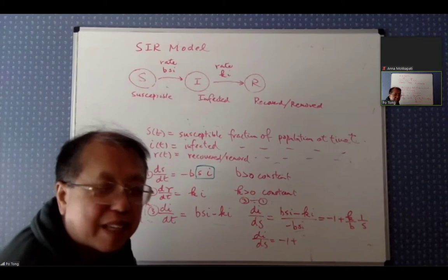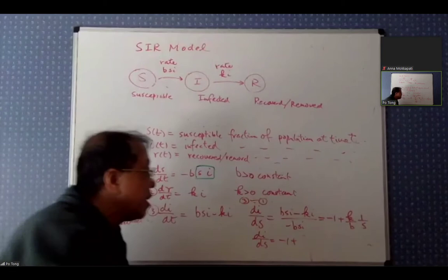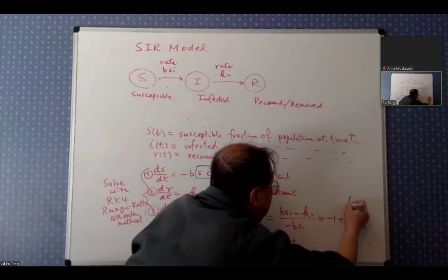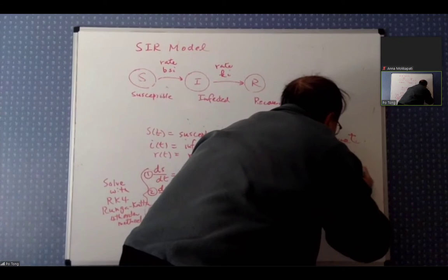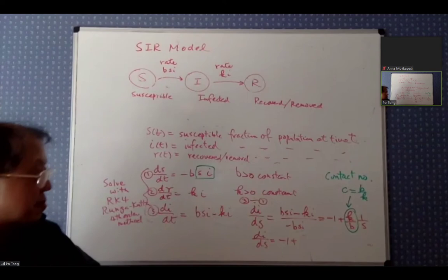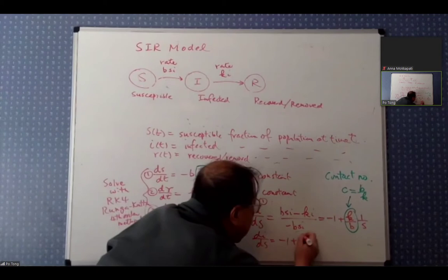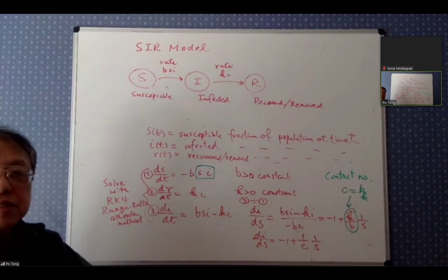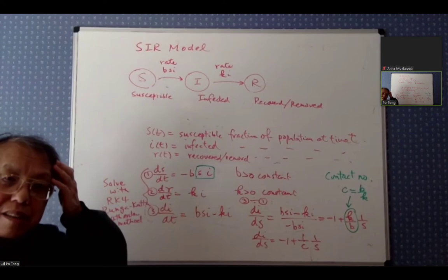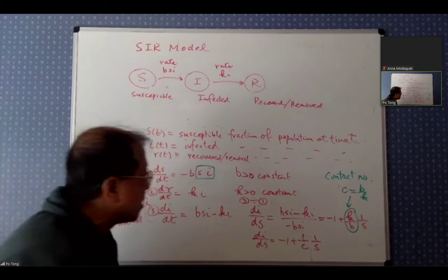In the literature, c = b/k is called the contact number — you may see this in the news. The contact number c basically says: one person who is infectious, how many people will they infect before they recover and are no longer infectious? So 1/c appears in the di/ds equation, and the smaller the contact number the better.